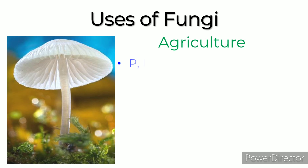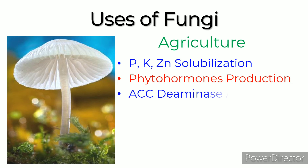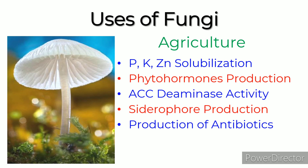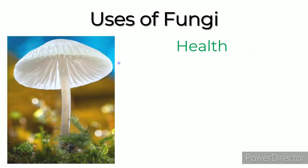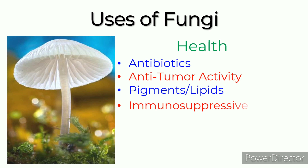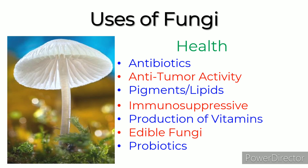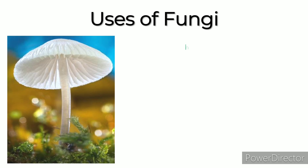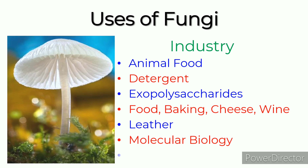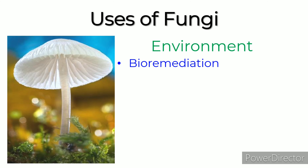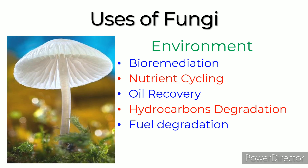Uses of fungi in agriculture include phosphorus, potassium, and zinc solubilization, phytohormone production, ACC-deaminase activity, siderophore production, production of antibiotics, lytic enzymes, and HCN. In health, fungi contribute antibiotics, antitumor activity, pigments or lipids, immunosuppressives, vitamins, edible fungi, and probiotics. In industry, they are used in animal food, detergents, and exopolysaccharides. In food, they are used in baking, cheese, wine, and leather. In the environment, they contribute to bioremediation, nutrient cycling, oil recovery, hydrocarbon degradation, and wastewater treatment.